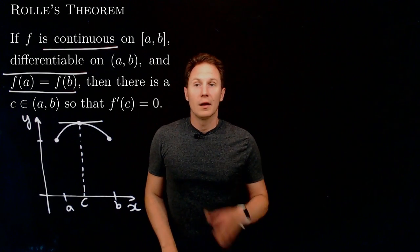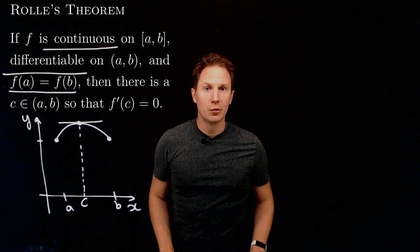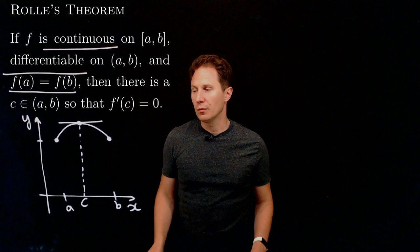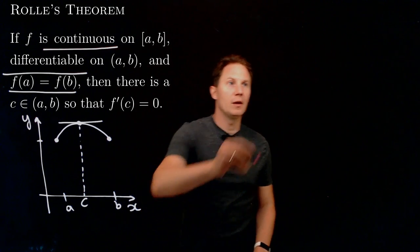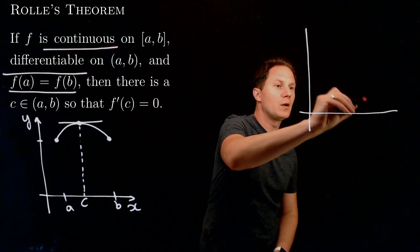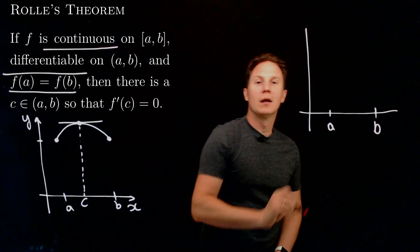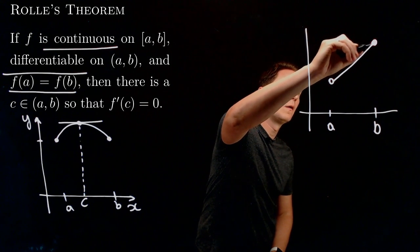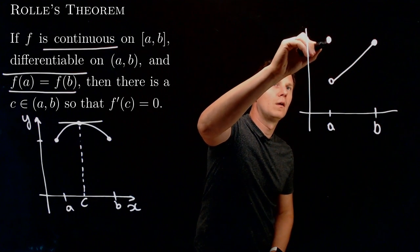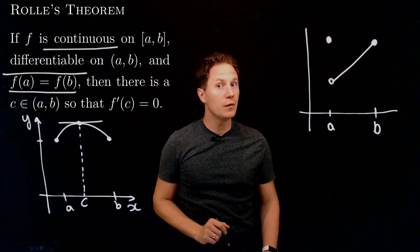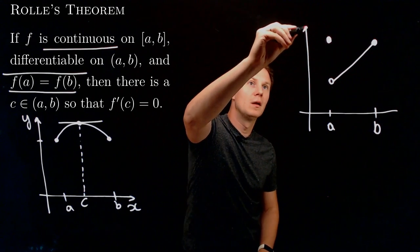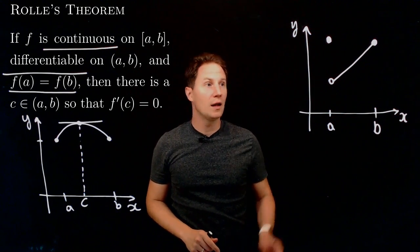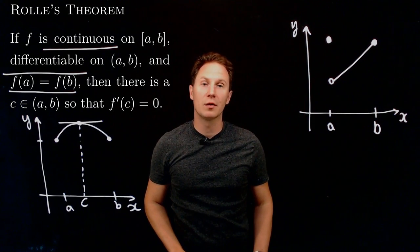All of the conditions in the theorem are crucial and necessary. For example, if f is continuous on only an open interval, you could imagine a function that is continuous on the open interval (a, b), has the same endpoint values, and is differentiable for all points between a and b — but because it's not continuous on a closed interval, Rolle's theorem does not apply, and there is no point at which the derivative would be zero.